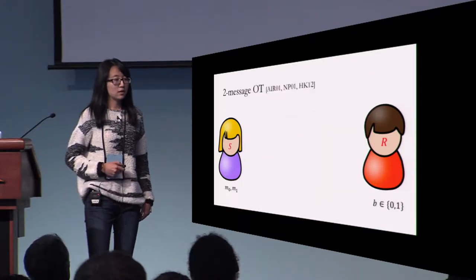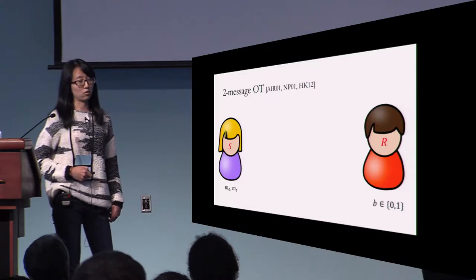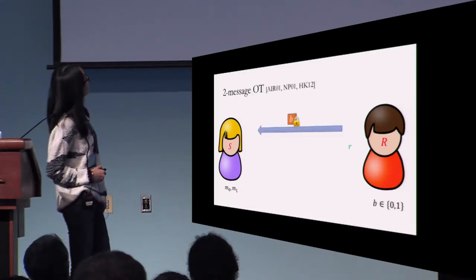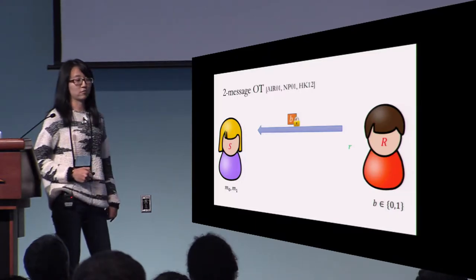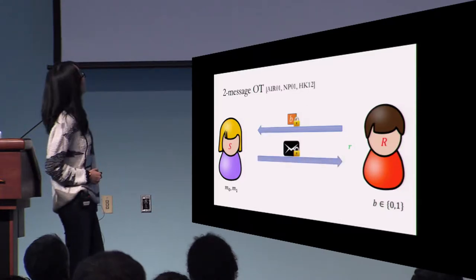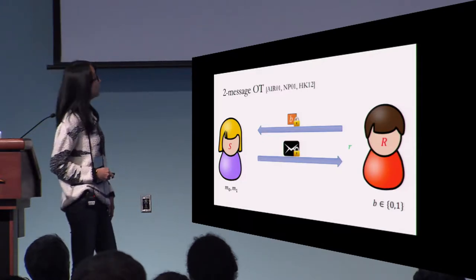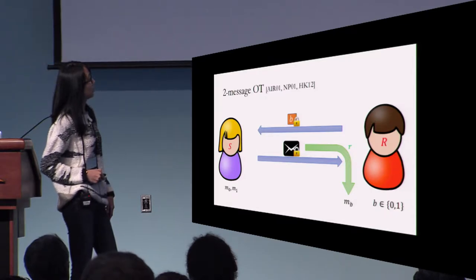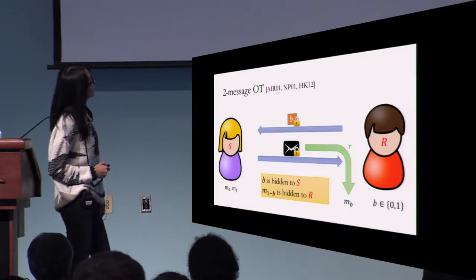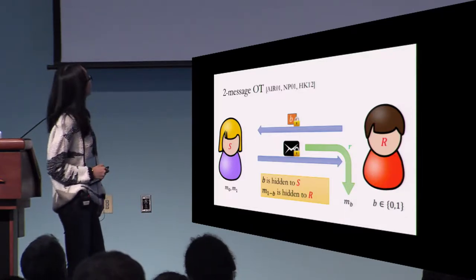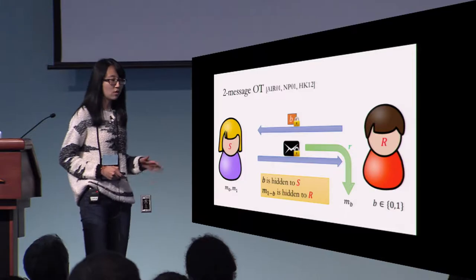If you consider a particular OT protocol — two-message OT — there are only two messages. In the first message, the receiver somehow commits to his bit B to the sender and keeps some randomness R as private information. In the second message, the sender somehow encrypts her two messages and sends them to the receiver. The receiver can then use the randomness to recover M_{1-B}. The security guarantee is the same: the first message hides bit B against the sender, and the second message hides M_{1-B} against the receiver.